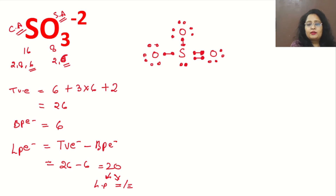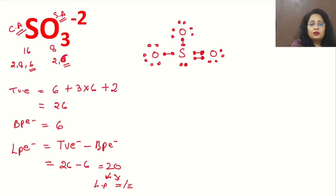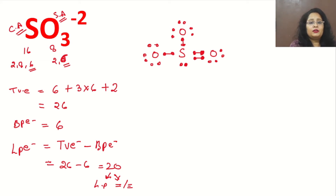To correct the structure, we remove a lone pair from one oxygen and form a double bond with sulfur. Now this oxygen has 8 electrons — its octet is complete — and sulfur shows a covalency of 4, which is correct. As for charges: oxygen with a double bond has zero charge, oxygen with one single bond has a −1 charge. So the two singly-bonded oxygens each carry a −1 charge.